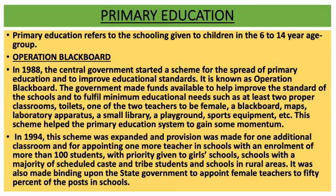In 1994, Operation Blackboard was expanded. Provision was made for one additional classroom and for appointing one more teacher in schools with an enrollment of more than 100 students. Priority was given to girls' schools, schools with a majority of scheduled caste and tribe students, and schools in rural areas. It was also made binding upon the state government to appoint female teachers to 50 percent of the posts in schools.